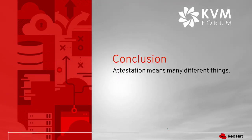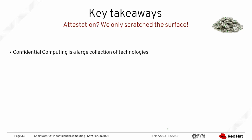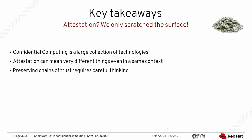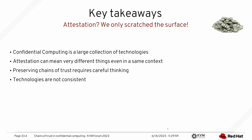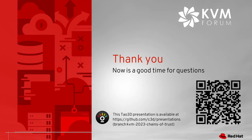In conclusion, attestation means many different things to many different people. We only scratch the surface here — Confidential Computing is a large collection of technologies, and attestation can mean different things even in the same context. Preserving the chain of trust reliably requires careful thinking, and the underlying technologies are not consistent, so we need adapters all over the place. For details on what I've shown, please refer to the QR code linking to the six-part Red Hat blog series.